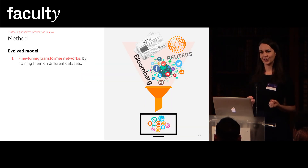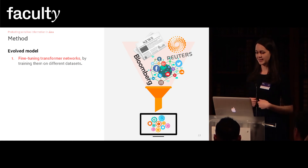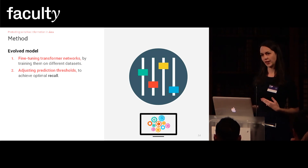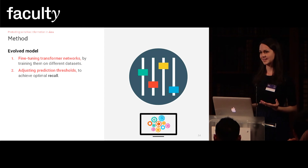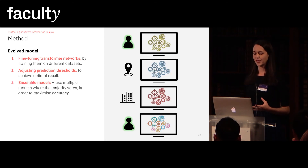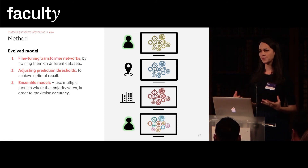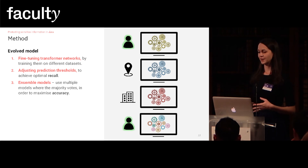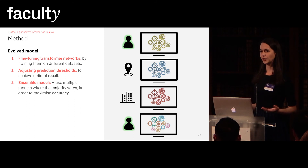We then took this model and fine-tuned it by training it on additional datasets that are more relevant to our use case. We also adjusted the prediction thresholds in order to increase the recall, which is the ability of the model to identify sensitive content. And finally, we included an ensemble of models in order to maximize accuracy. These models vote on the prediction and the final output will be the one chosen by the majority. In the example here, 'person' is the label associated to the word as chosen by two of the four models.